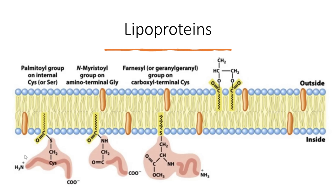Another type of post-translationally modified protein is lipoprotein. Lipoprotein consists of a lipid group that allows the protein to attach itself onto the cell membrane. Because lipids are hydrophobic in nature, the attachment of protein to the cell membrane is not possible without attachment to the lipid family. There are three different types of protein-lipid linkages: the linkage of a palmitoyl group on an internal cysteine or serine residue, the myristoyl group attaching to the glycine residue, and the binding of the farnesyl group on the carboxy terminal of cysteine. With these three types of attachments, the protein can anchor itself to the cell membrane and perform its functions.